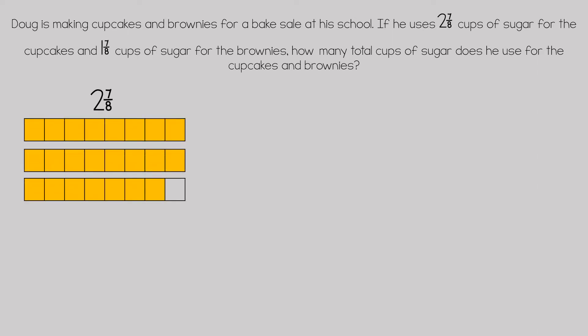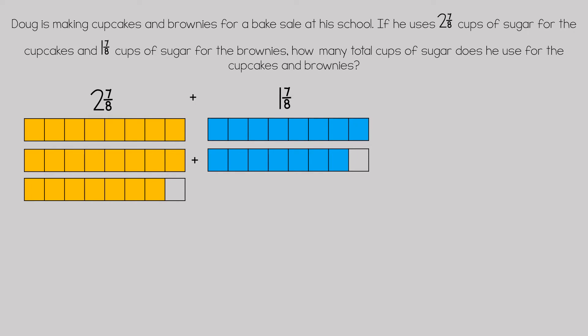Two and seven-eighths is represented here. Two wholes are shaded in, or eight-eighths, plus one and seven-eighths. One whole, or eight-eighths, is shaded in plus seven-eighths.